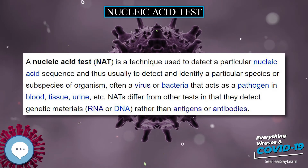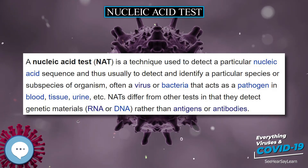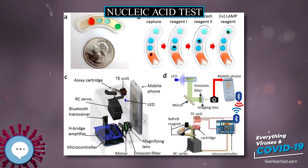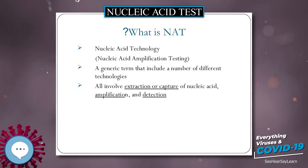Such NATs are called Nucleic Acid Amplification Tests. There are several ways of amplification, including polymerase chain reaction (PCR), strand displacement assay, or transcription-mediated assay (TMA).